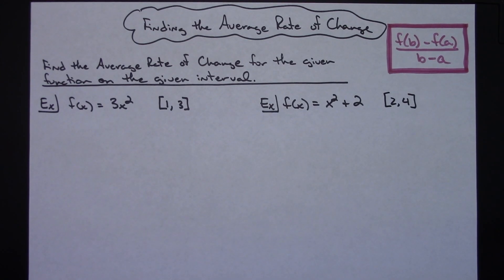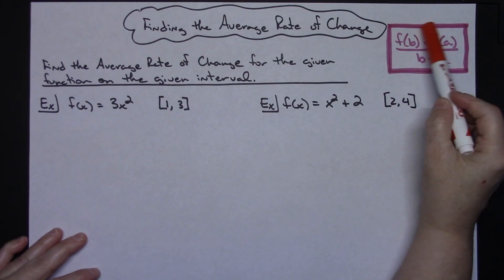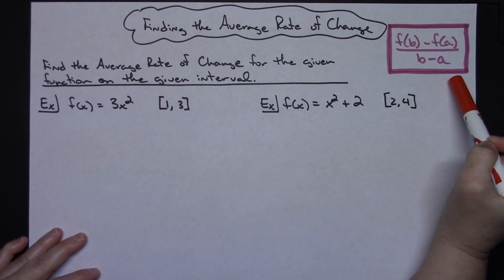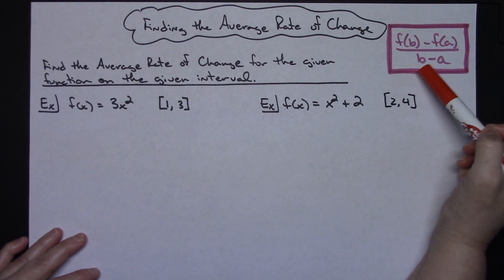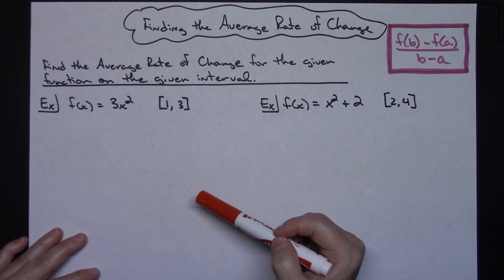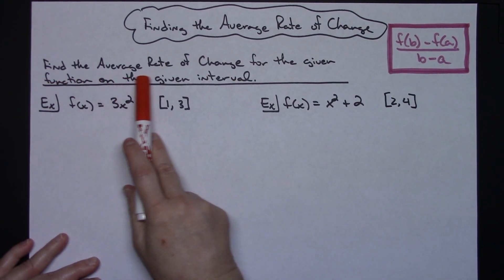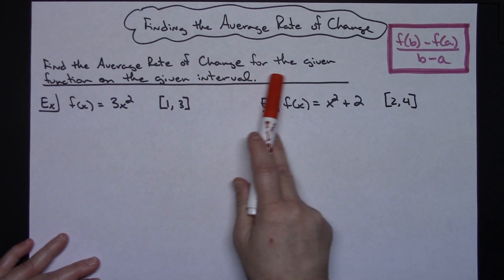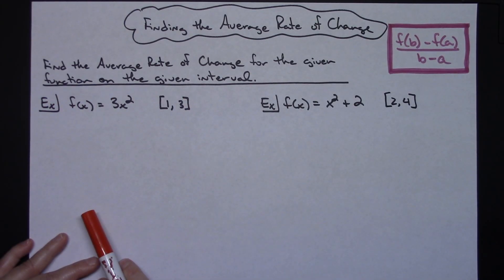In this video I'm going to work out a couple examples of using the average rate of change formula. Up here in the corner I've got that formula written down: F of B minus F of A, all over B minus A. We're going to find the average rate of change for the given function on the given interval.